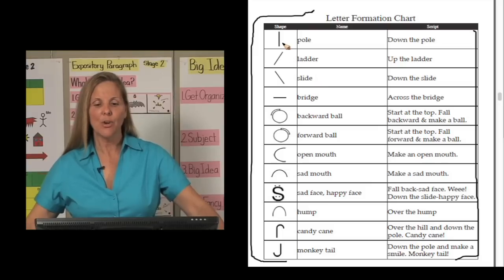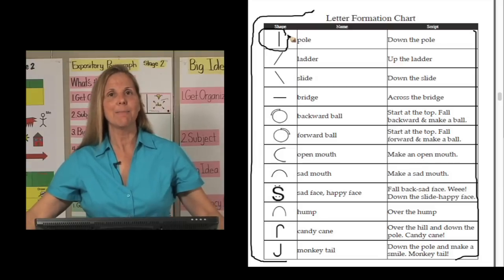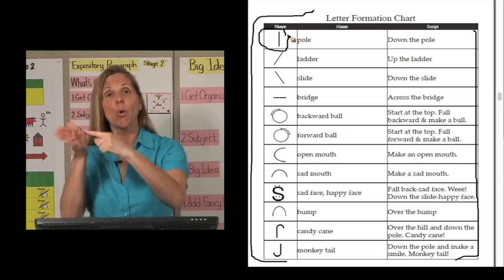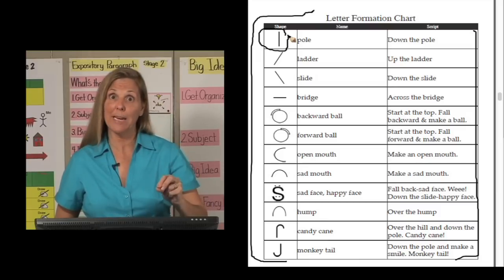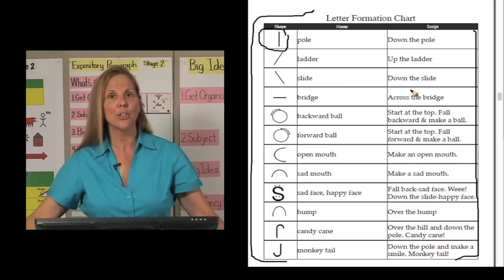For example, if you notice in this top box, the shape looks like a pole, and that's called the pole, and the students are going to say down the pole as they make the shape with their body, or as they sky write it down the pole, down the pole on their palm, or if they're writing on a whiteboard or with paper and pencil. This is a wonderful at-a-glance chart for you to refer to so that you can remember each one of the shapes.